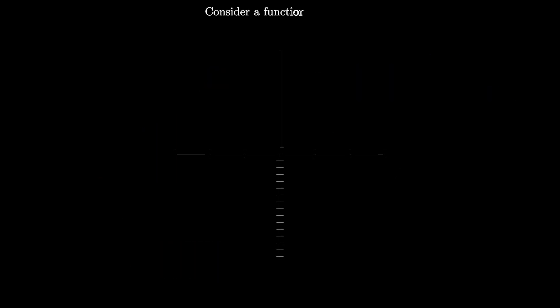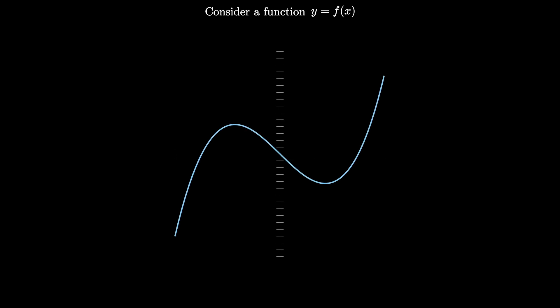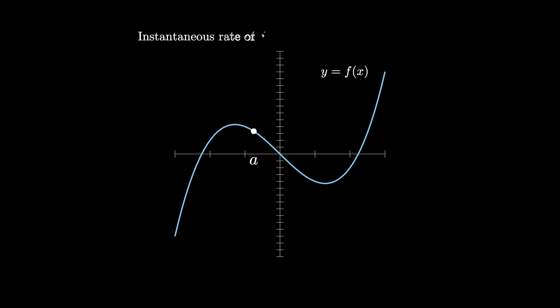One of the first principles you learn in a calculus class is how to find the instantaneous rate of change of a function at a particular point. So consider this function y equals f of x, and this point A. How do we find the instantaneous rate of change at that exact point?